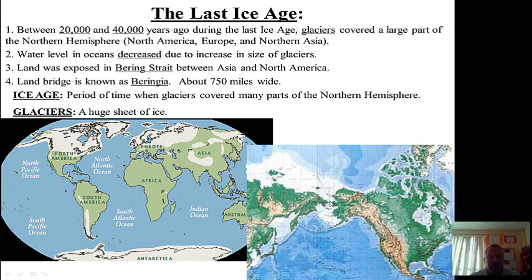So you could see the land. During the Ice Age, Asia was connected to North America. You could walk from Asia across into North America because the water had gone down. This land that became exposed is known as Beringia. It's also known as the Land Bridge. Think about what a bridge does — it connects two places. So this land served as a bridge. It connected Asia to North America, so it's called the Land Bridge.